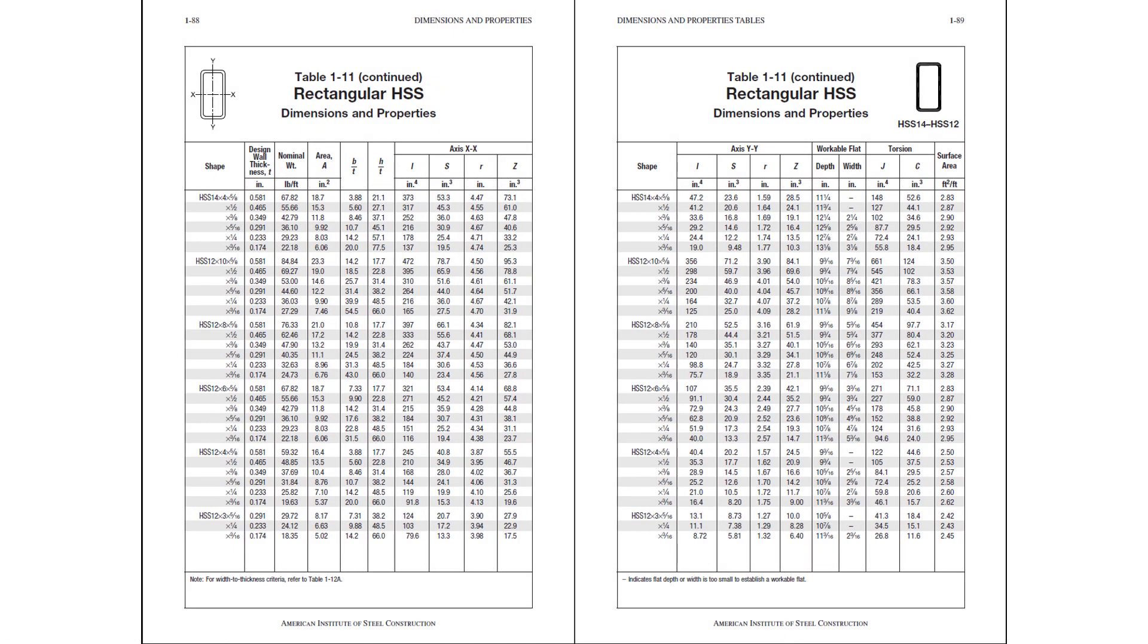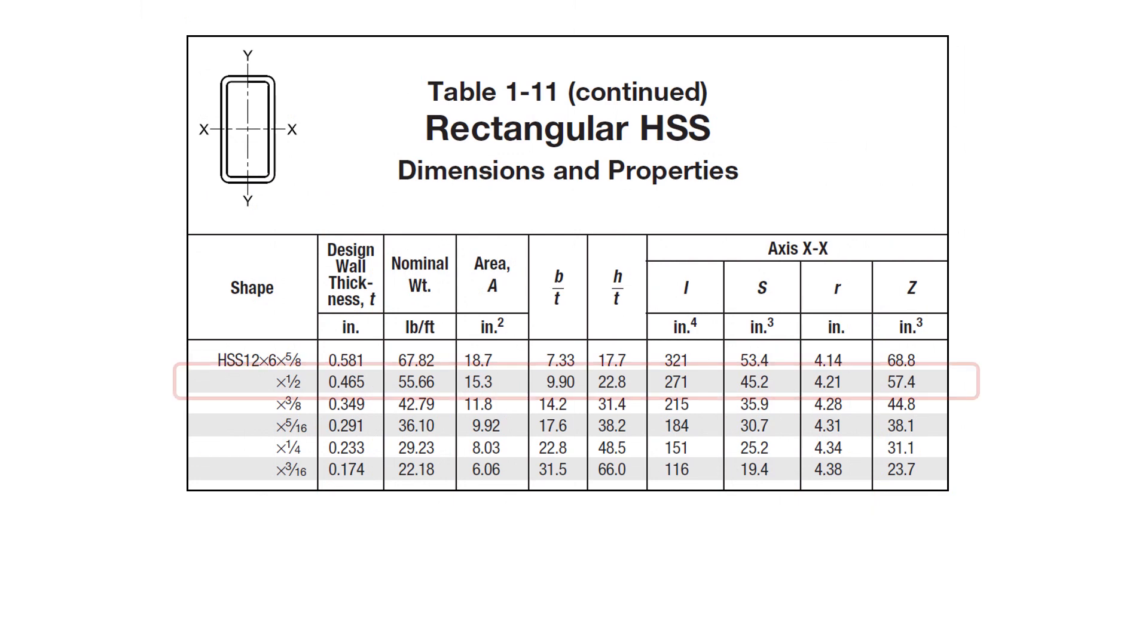Next, we'll turn to table 1-11 of the AISC manual to determine the cross sectional area of the HSS 12 by 6 by half. And zooming in a little bit, you can see that for the 12 by 6 by half, we have an area A of 15.3 inches squared.